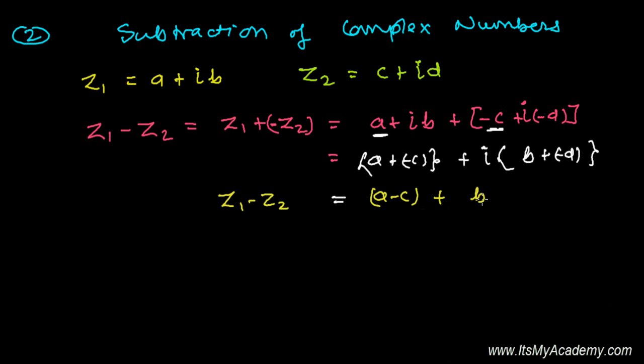plus I times B minus D. So the difference of two complex numbers is simply the difference of the real parts and the difference of the imaginary parts.